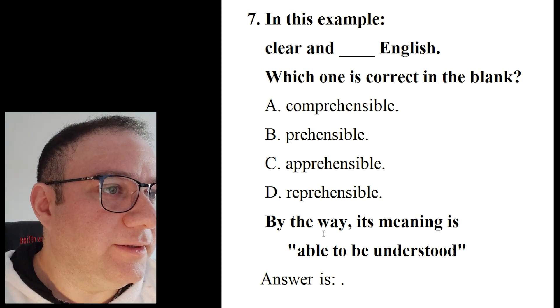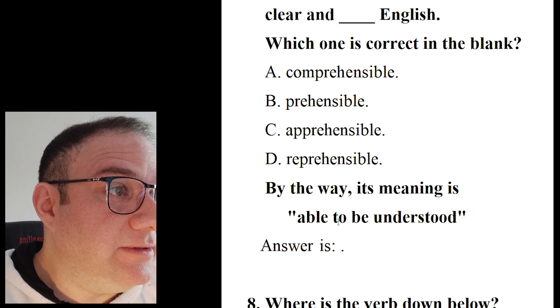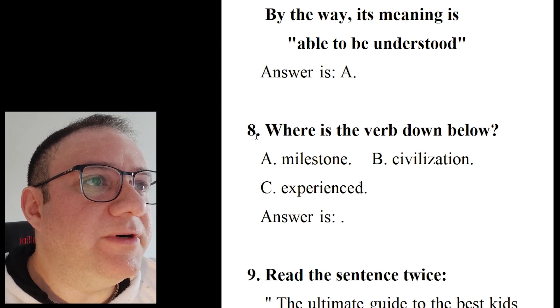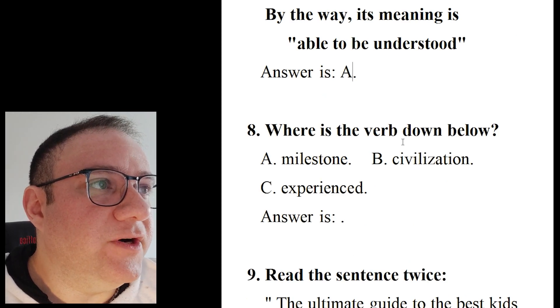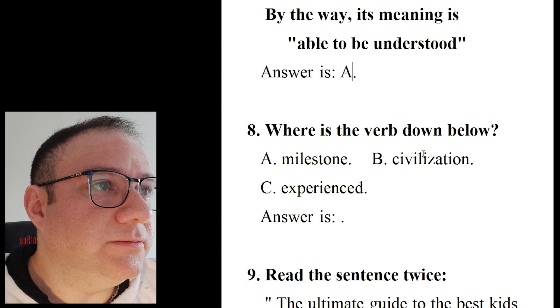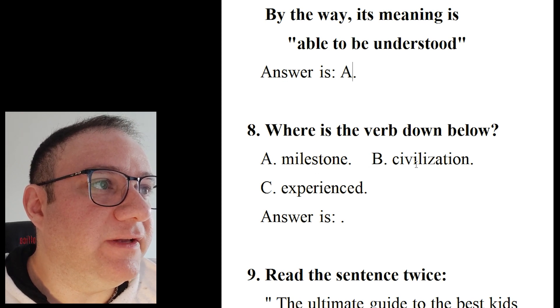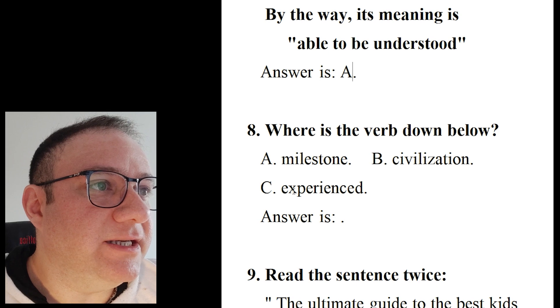By the way, its meaning is able to be understood. Question number eight: Where's the verb down below? A. milestone, B. civilization, C. experienced. The answer is C.